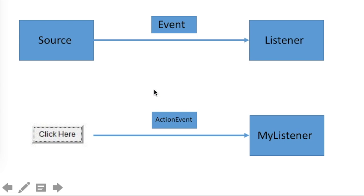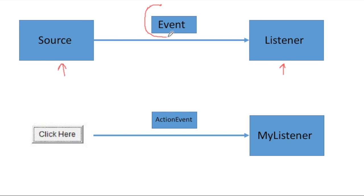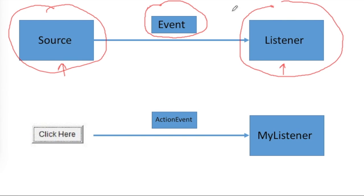In this video we'll see how to handle an event in Java. Java follows the event delegation model. In this model, a source component or object will generate an event, and there will be another object which will be a listener for that event. An event is also defined as an object. A source will generate an event and a listener will respond to that event, and when the source generates an event it will send the event object to the listener.